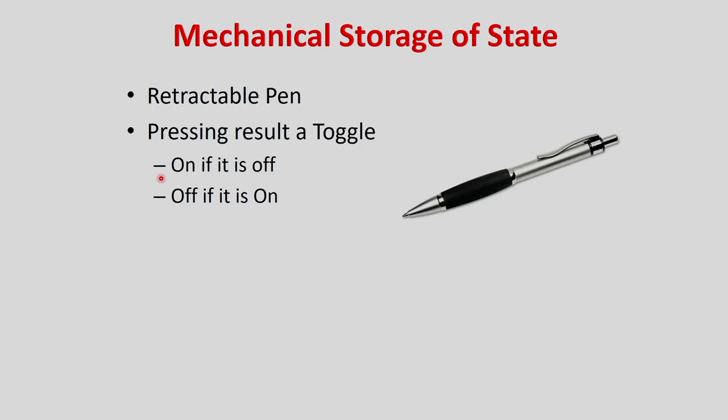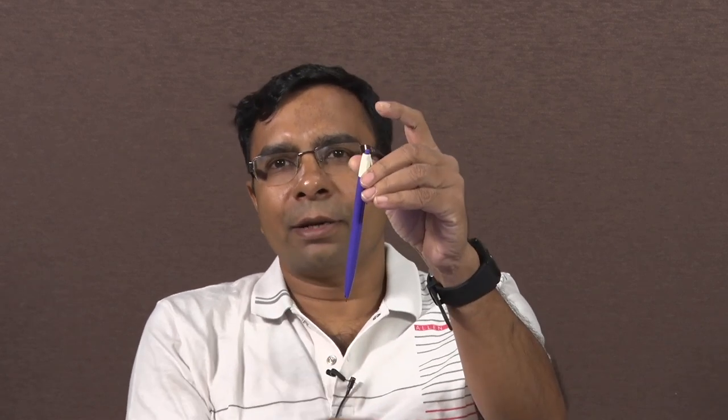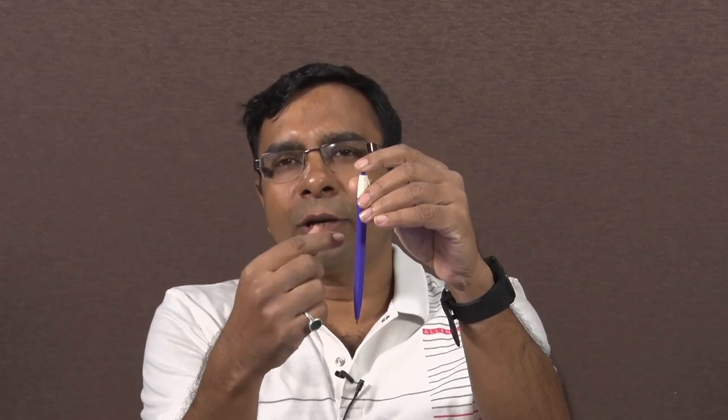Pressing results in a toggle — on if it was off, off if it was on. That is how the pen stores state mechanically. Now, looking at how to develop a storage element in electronic circuits, consider another example: flight attendant call buttons. When you press the call button, the light stays on after the button is released. When cancel is pressed, the light should turn off.